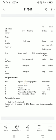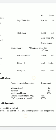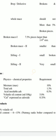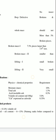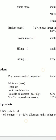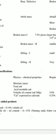ISO specifications cover chemical composition including moisture, total ash, acid insoluble ash, volatile oil content, and calcium oxide, etc. You can study the table for commercial categories.